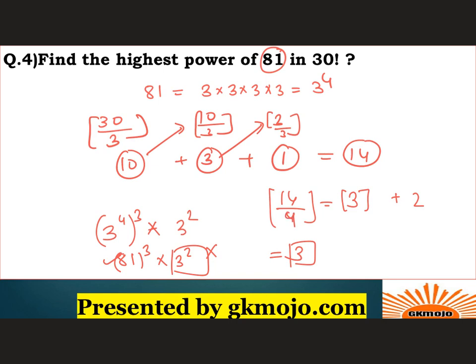We divided by 4, so we got 3 as quotient and 2 as remainder. So basically what happens is 3 to the power 4, into 3, into 3 square remains. So 81's highest power will remain 3 only. So the correct answer to this question is 3.